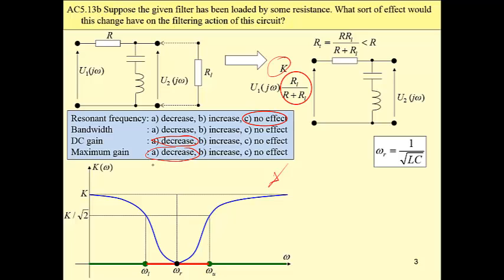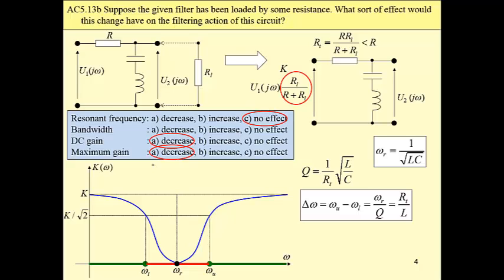And finally bandwidth. For this circuit once again we have to recall the formula for quality factor for series RLC resonant circuit. We have R_T less than R, then it means we have a higher quality, greater value of quality factor.